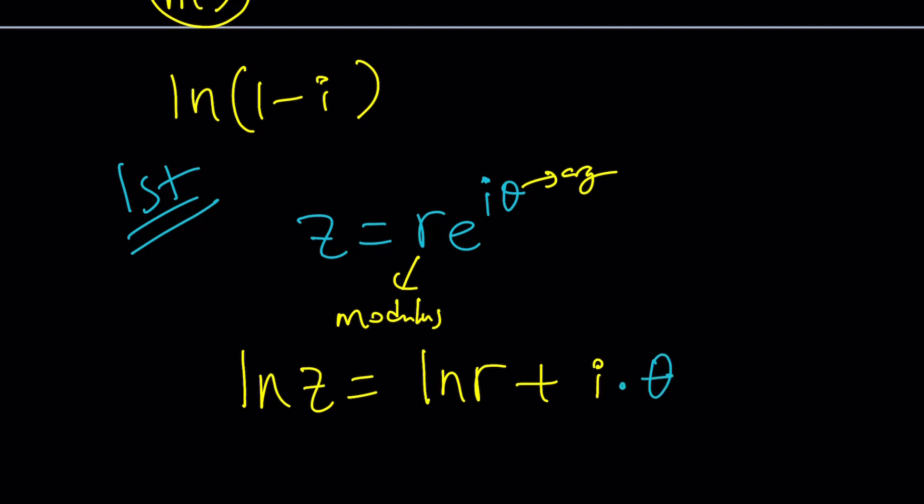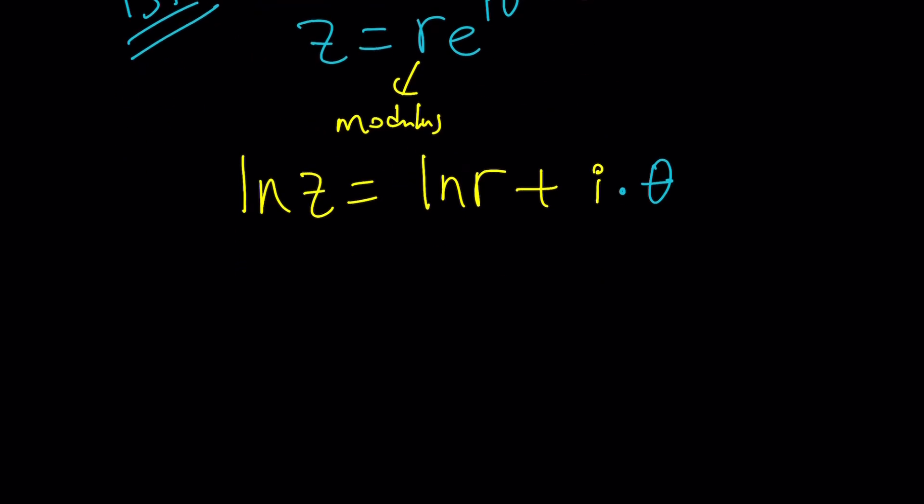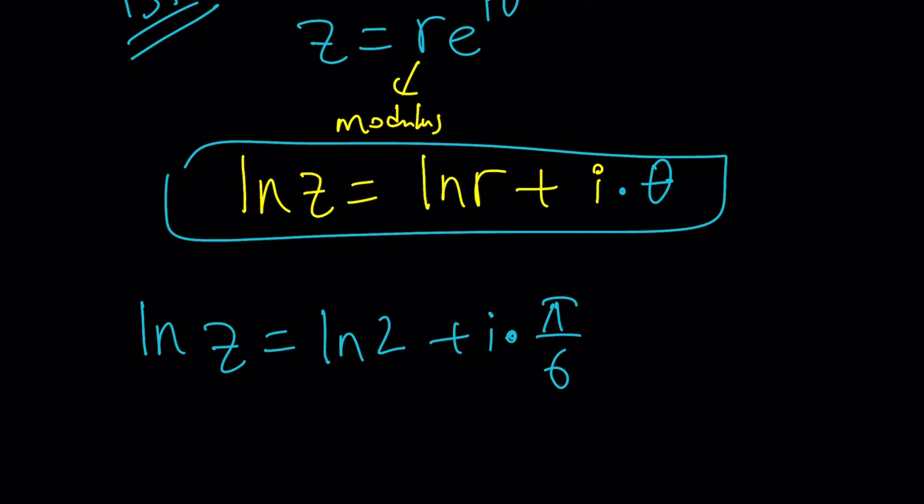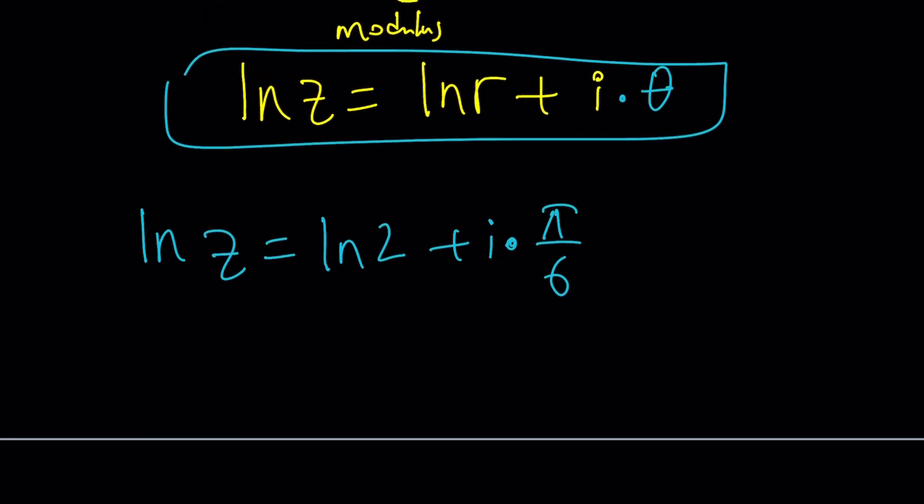So how does this compare to my equation? Take a look. I know that ln(z) is equal to ln(2) plus i times π over 6. This is my equation. But ln(z) can also be written like this if z is equal to that. So if I replace ln(z) with this, then I'm going to be getting ln(r) plus iθ equals ln(2) plus i times π over 6.